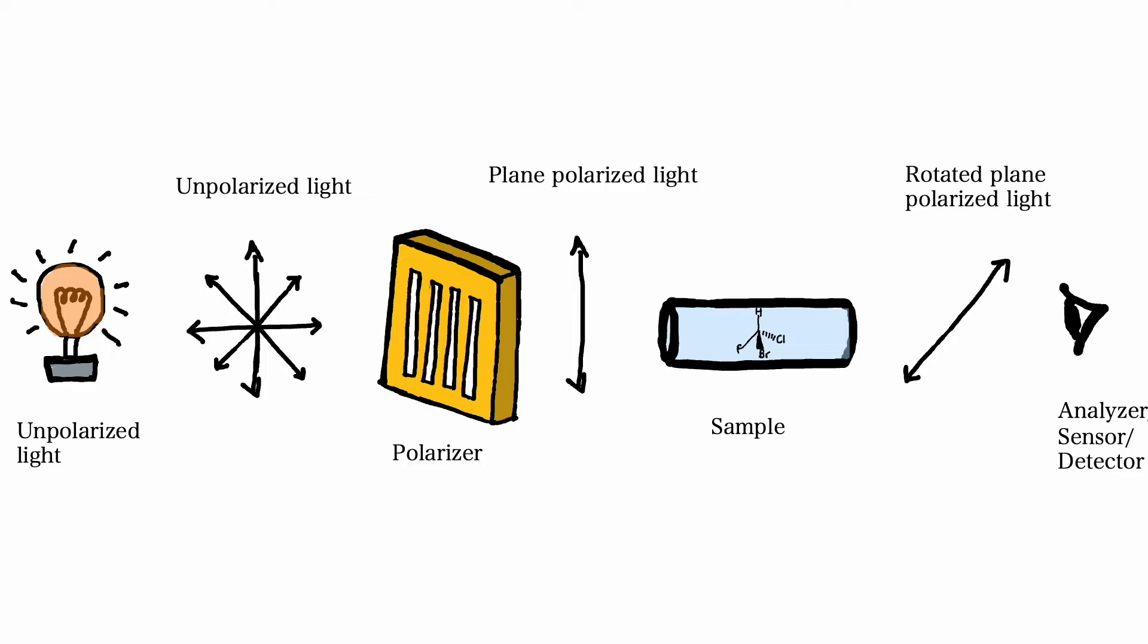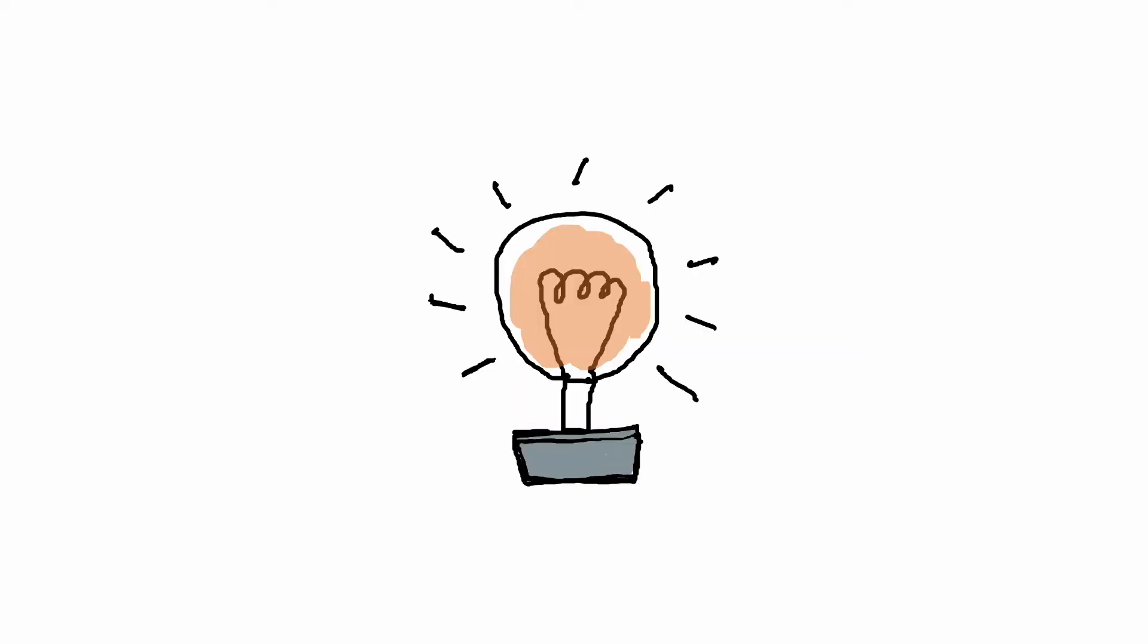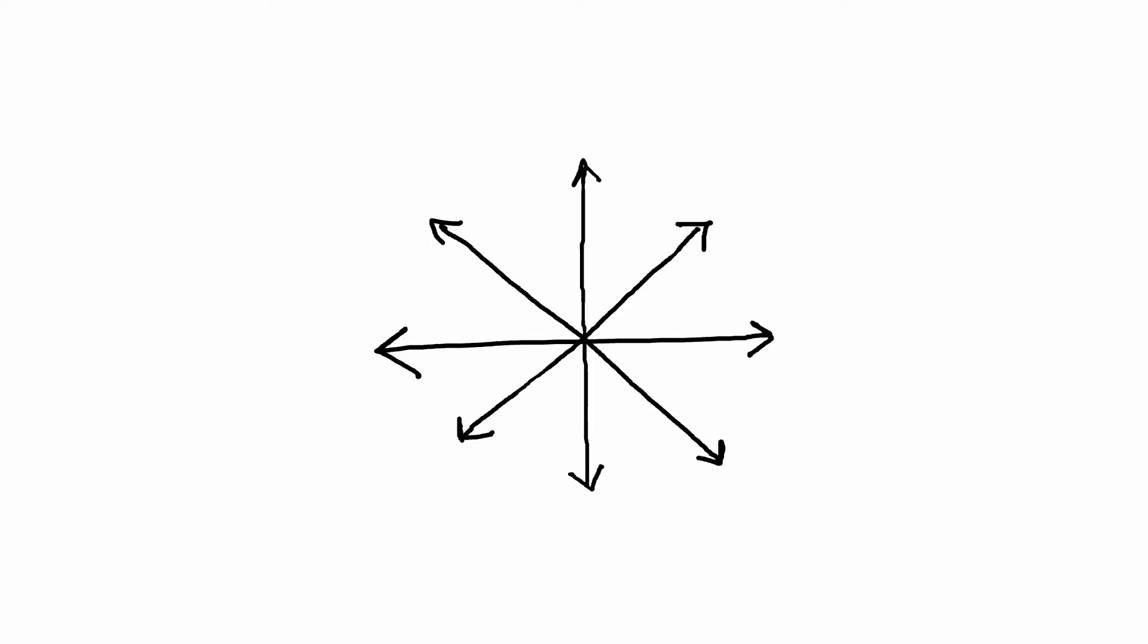Here's how the polarimeter works. The polarimeter begins with a light source that emits unpolarized light. An example of this is a light bulb. Unpolarized light contains light waves vibrating in all different directions.